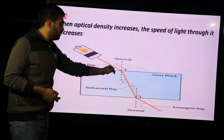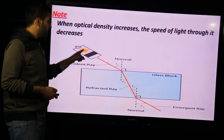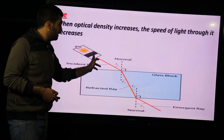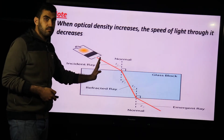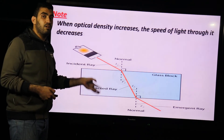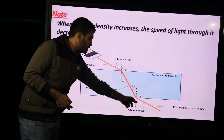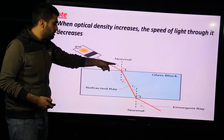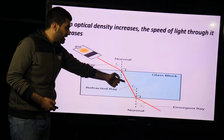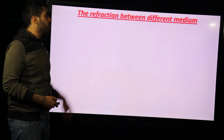In light refraction, we have the incident light ray, the normal, the refracted light ray, and the emergent light ray. The angle between the incident light ray and the normal is the angle of incidence. The angle between the refracted light ray and the normal is the angle of refraction. The angle between the emergent ray and the normal is the angle of emergence.